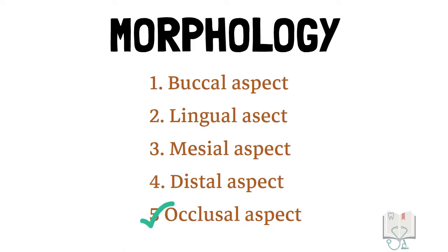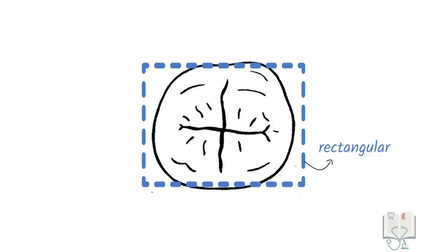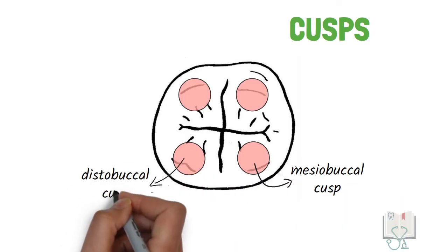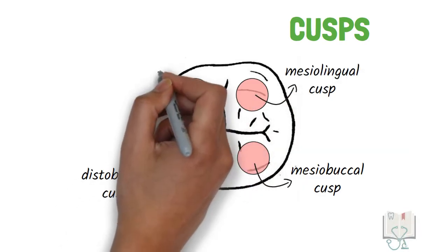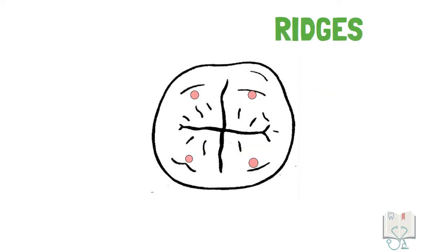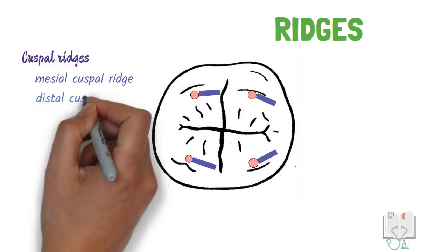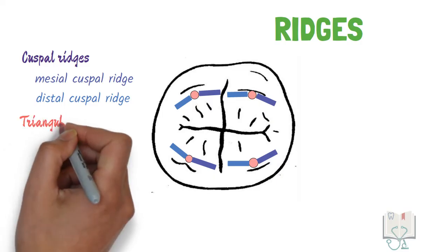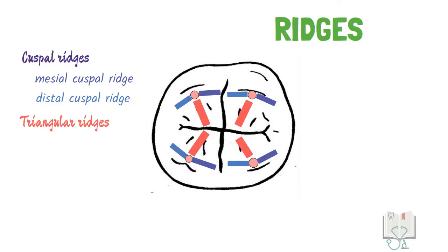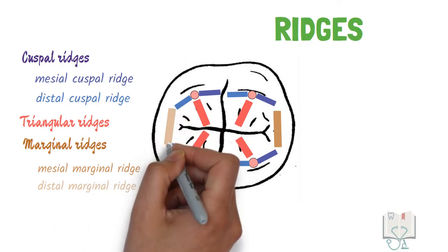Finally, the occlusal aspect. The outline form of the crown is roughly rectangular in shape. Four cusps are seen: mesiobuccal, distobuccal, mesolingual, and distolingual — all of almost the same size. Regarding ridges, each cusp has two cuspal ridges — one mesial and one distal. There are four triangular ridges, one running from each cusp tip toward the center, and two marginal ridges — mesial marginal ridge on the mesial border and distal marginal ridge on the distal border.